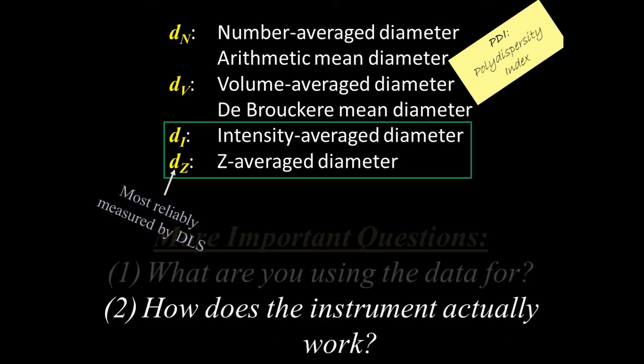In fact, dz is the default number reported by DLS measurements, not dn or dv. The reason why has to do with the second important question I mentioned earlier. How does the instrument actually work? How does DLS measure average diameter?